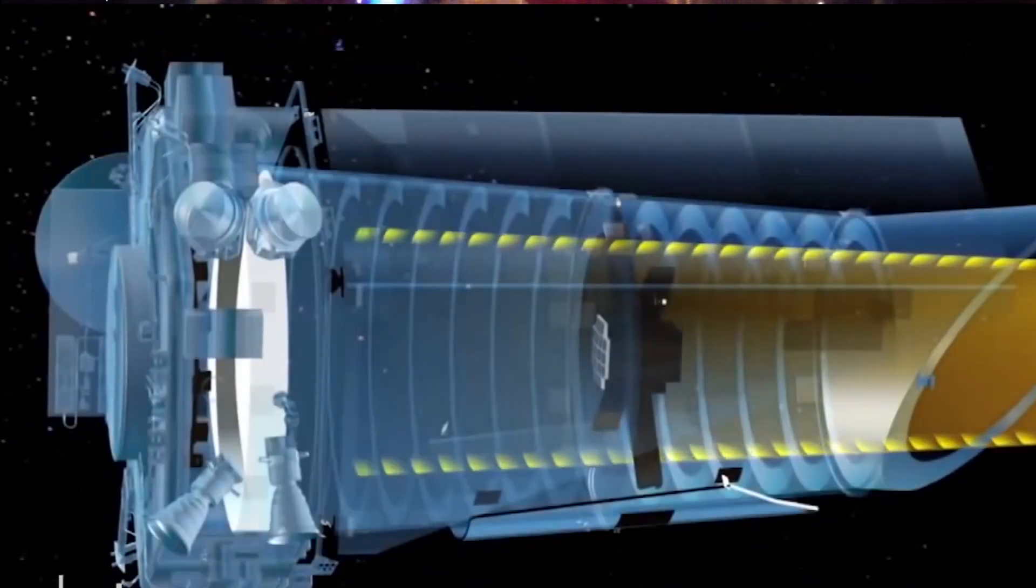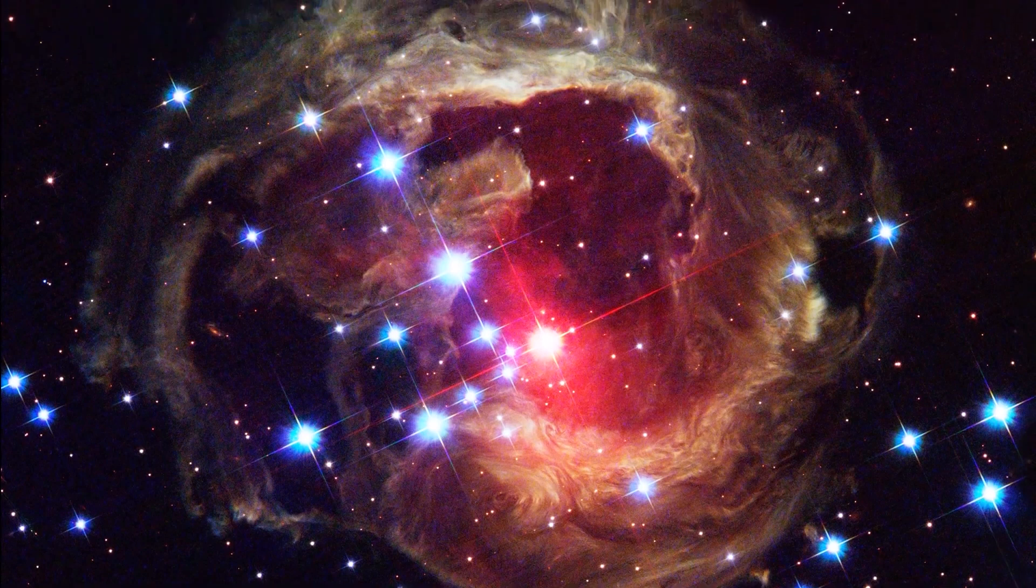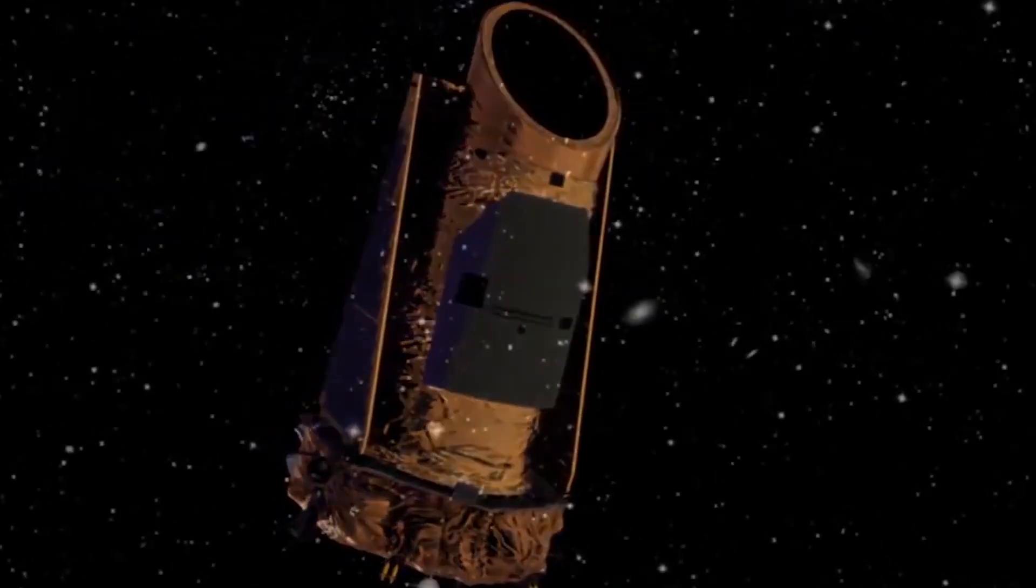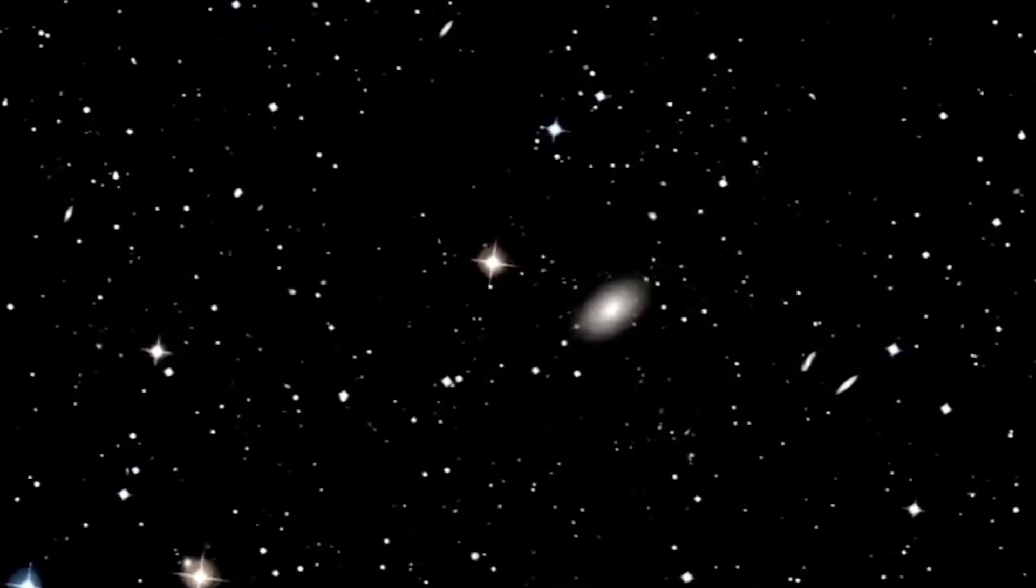Kepler observed some 150,000 stars for small decreases in brightness caused by planets passing in front of them. The magnitude and duration of this dimming can be used to determine the size of the transiting planet.